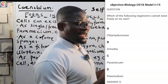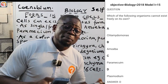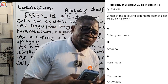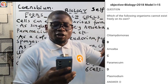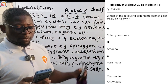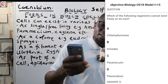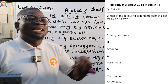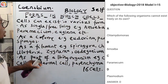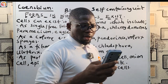Question 3: Which of the following organisms cannot exist freely on its own? This is another way of asking which is not single or free living — notice how JAMB twists questions. A — Chlamydomonas: single and free living. B — Amoeba: single and free living. C — Paramecium: single and free living. D — Plasmodium: NOT free living; it causes malaria and must stay in a host. The correct answer is D — Plasmodium.